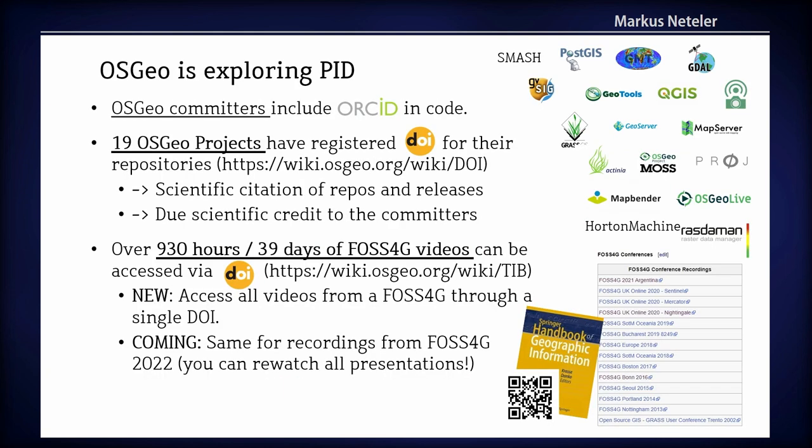OSGEO is already exploring this. OSGEO code committers, like the GRASS project, already include their ORCID IDs in code. 19 OSGEO projects have registered Digital Object Identifiers — you can see the logos here. For their repositories, we can scientifically cite the whole repo, but also individual releases. You can do that in your work to give due scientific credit to the committers — that's the people with the ORCIDs. So it really works and gives benefit.